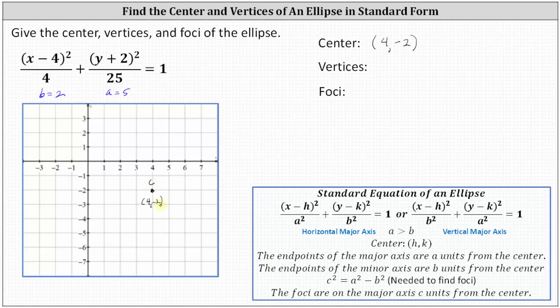We know we have a vertical major axis, and since a equals five, we add and subtract five to the y-coordinate of the center to find the endpoints of the vertical major axis. Adding five: negative two plus five is three, indicating one endpoint of the major axis is (4, 3).